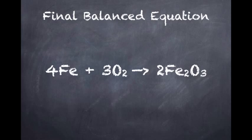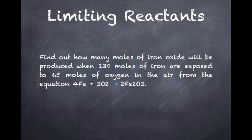In a sample question, we are asked to find out how many moles of iron oxide will be produced when 130 moles of iron are exposed to 65 moles of oxygen in the air. From the equation, 4Fe plus 3O2 reacts to produce 2Fe2O3.